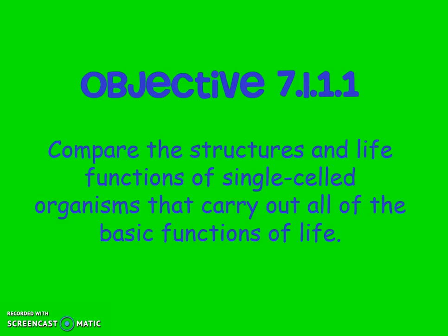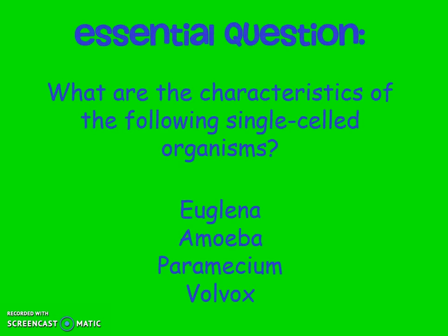The objective for North Carolina is to be able to compare the structures and life functions of single-celled organisms that carry out all of the basic functions of life. The essential question for today: what are the characteristics of the following single-celled organisms? The euglena, amoeba, paramecium, and volvox. These are the four single-celled unicellular organisms we are going to talk about today.